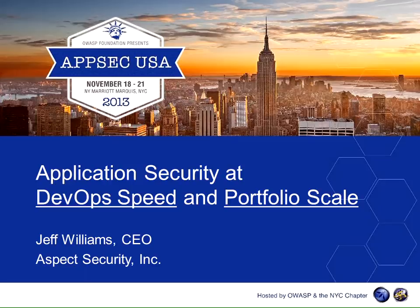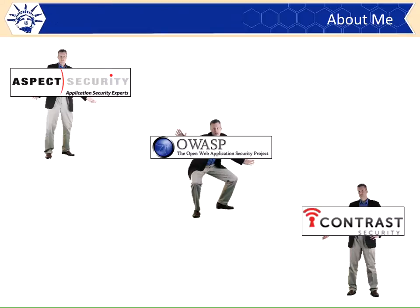Good morning, everybody. Glad to see you guys made it awake at this early hour to hear something about DevOps and AppSec. Let me introduce myself. My name's Jeff Williams. Some of you may know me from some of the work I've done at OWASP. I wrote WebGoat and the Enterprise Security API and the OWASP Top 10. I was chair of OWASP for eight years. I'm also the CEO of Aspect Security, a consulting company. If any of you are really tired of hassling with static analysis tools, come check out Contrast at our booth.